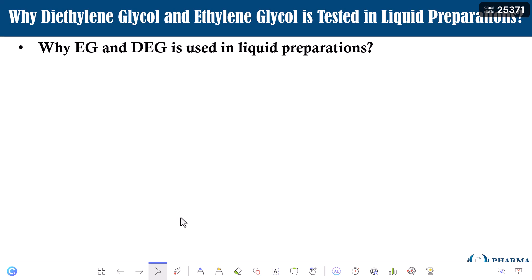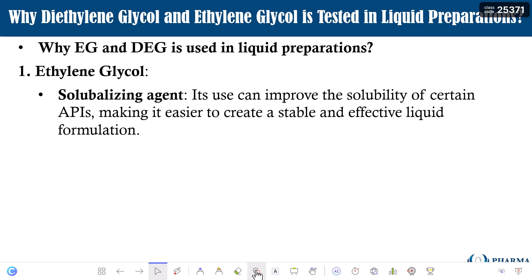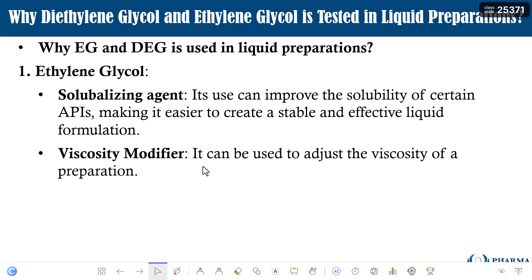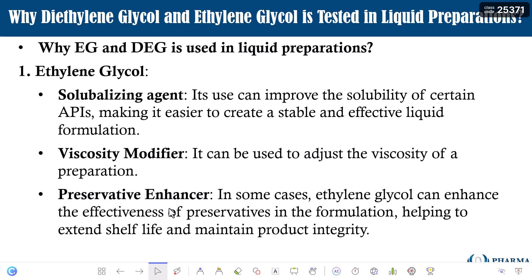Why are ethylene glycol and diethylene glycol used in liquid preparations? Ethylene glycol is used as a solubilizing agent — its use can improve the solubility of certain APIs, making it easier to create stable and effective liquid formulations. The second use is as a viscosity modifier, changing the viscosity of formulations as needed. In some cases, it also helps as a preservative enhancer, extending shelf life and maintaining product integrity.